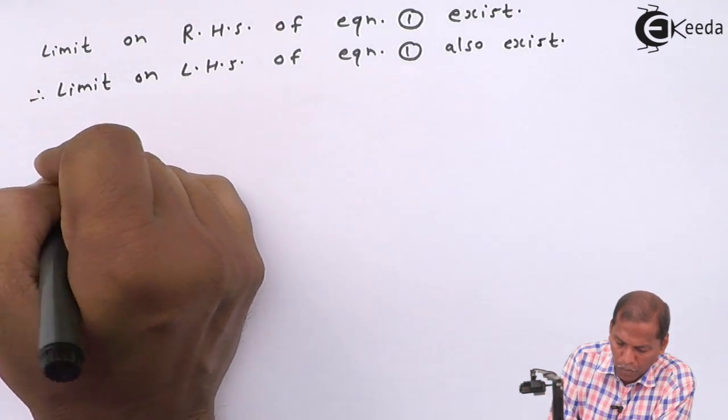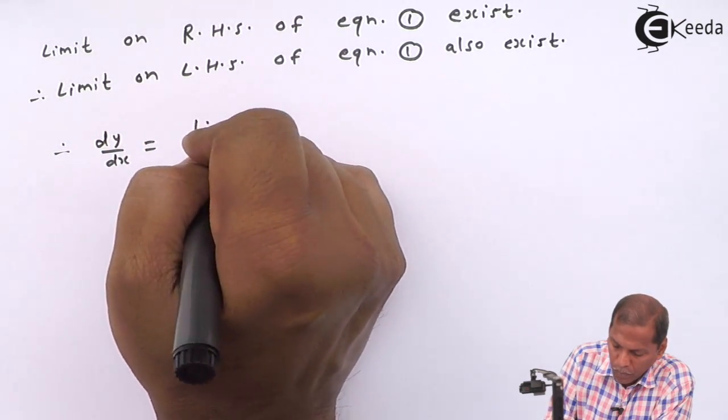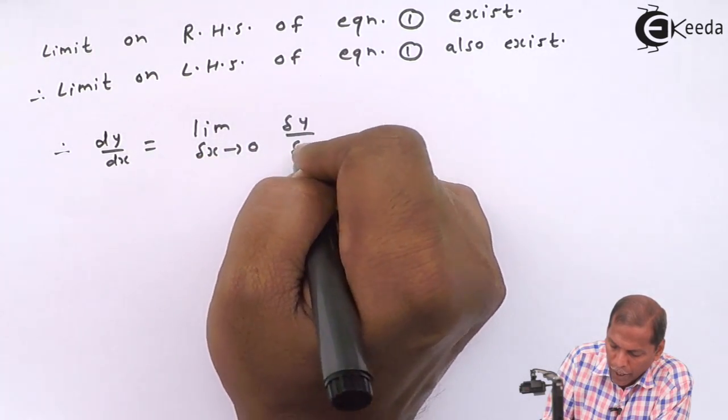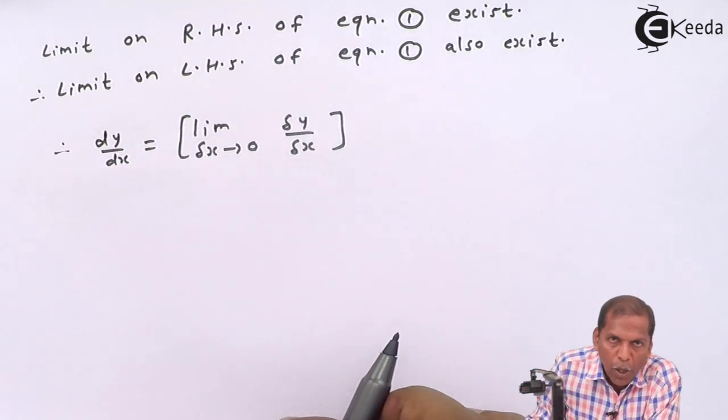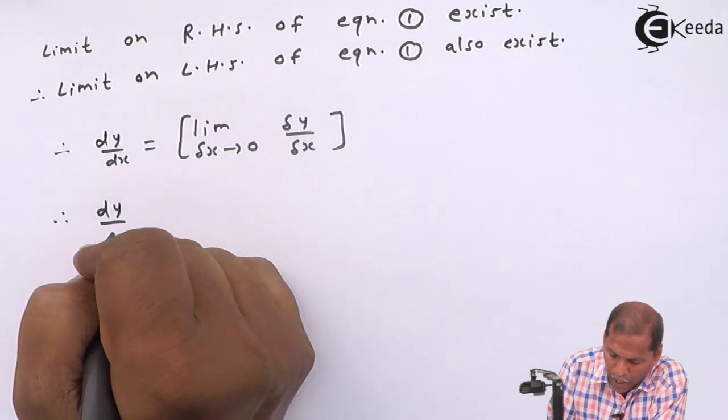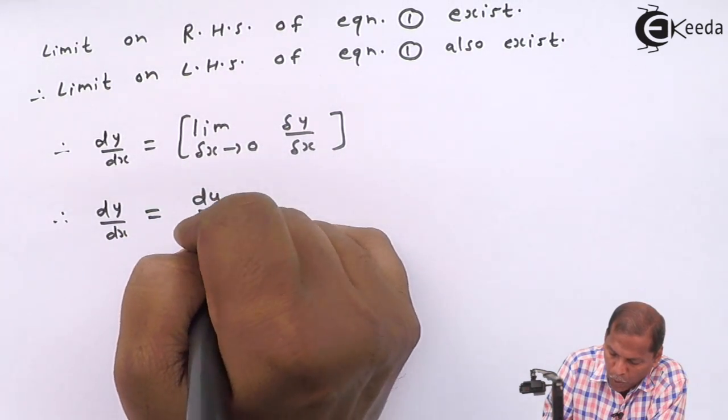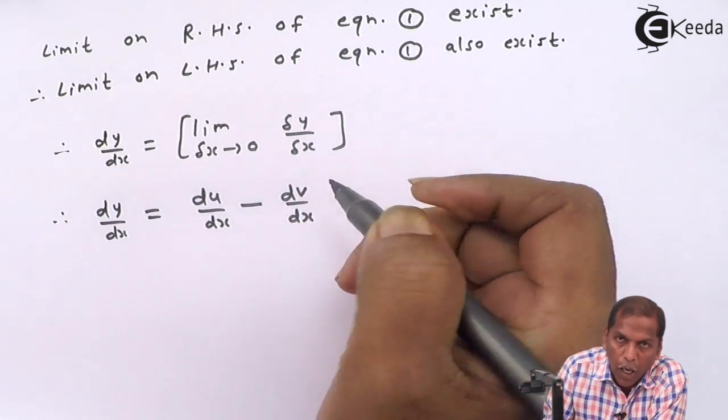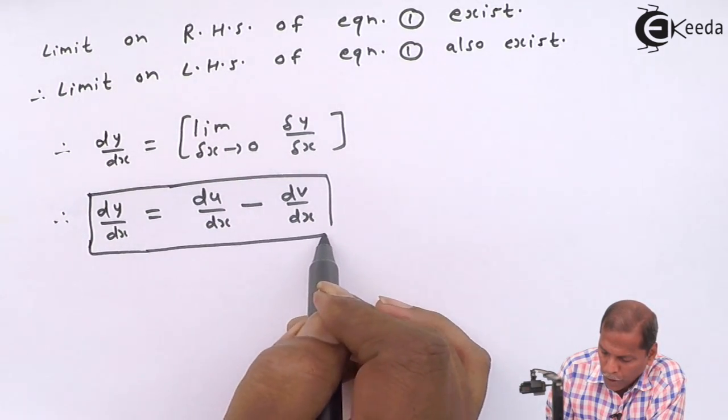Therefore dy/dx equals limit δx tends to 0 of δy/δx. Combining these all results, we get finally dy/dx equals du/dx minus dv/dx. So this is the required proof for the given theorem.